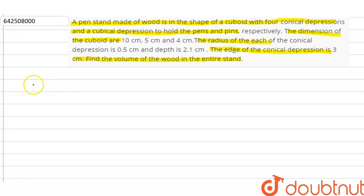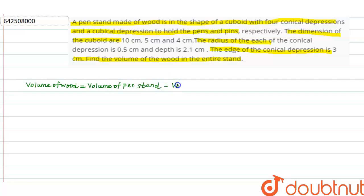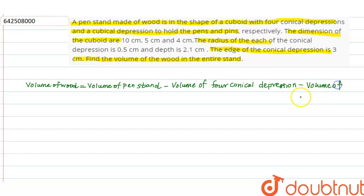For finding the volume of wood, volume of wood is equal to volume of pen stand minus volume of four conical depressions, minus volume of cubical depression.